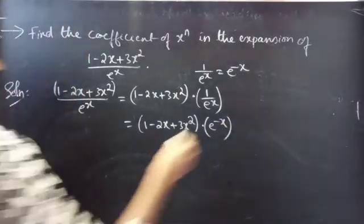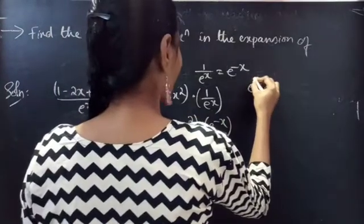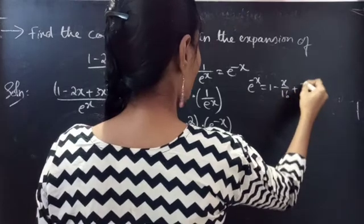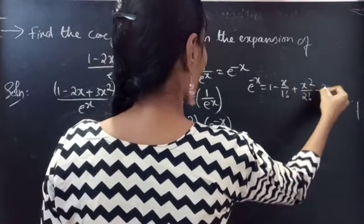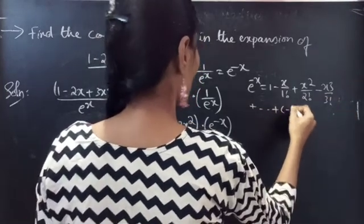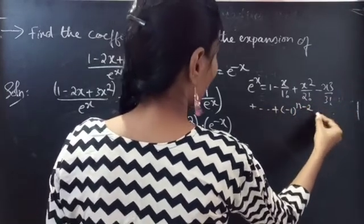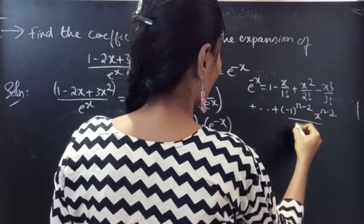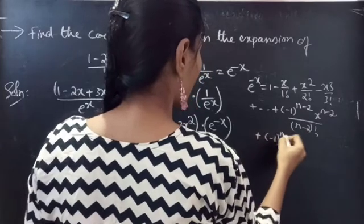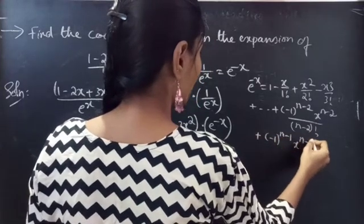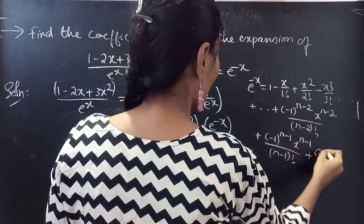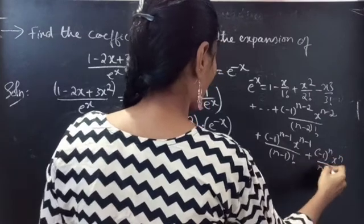We know that e power minus x equals 1 minus x by 1 factorial plus x square by 2 factorial minus x cube by 3 factorial plus so on, up to plus minus 1 power n into x power n by n factorial.